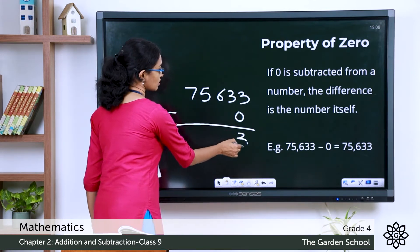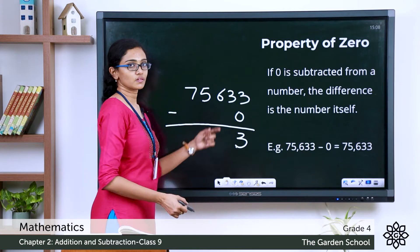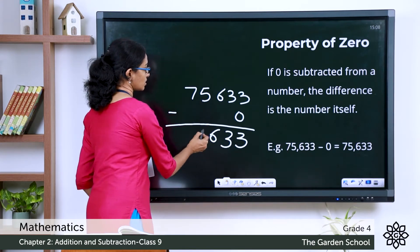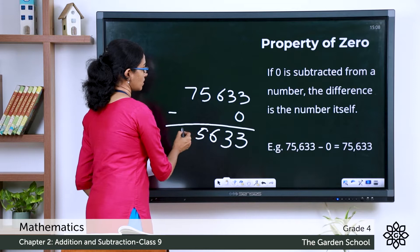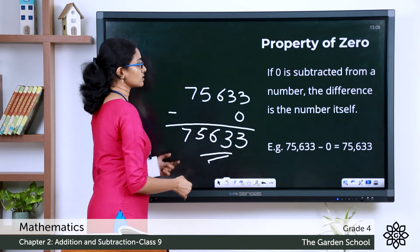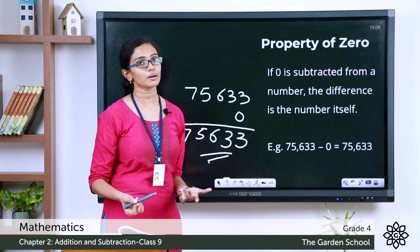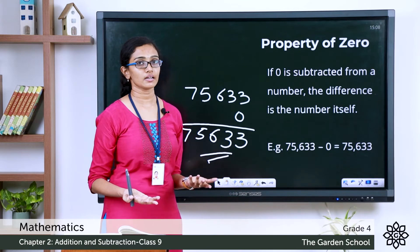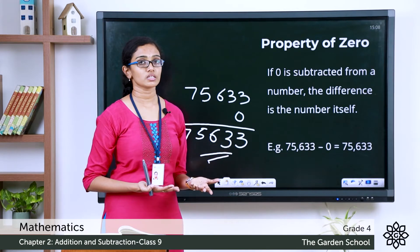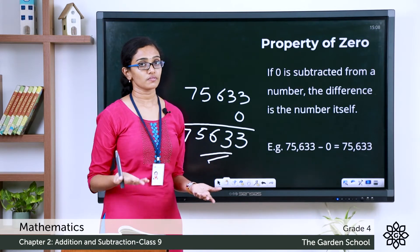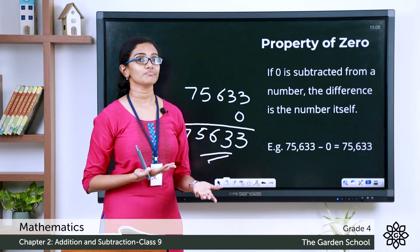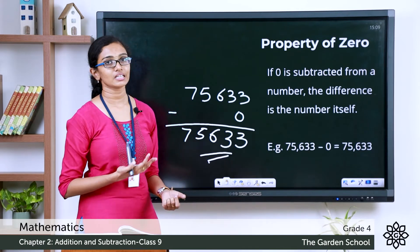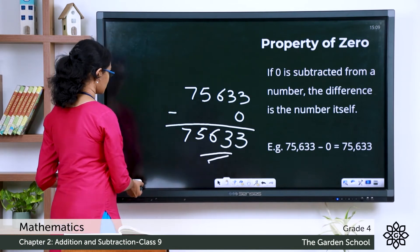Let's subtract the ones: 3 minus 0 ones is 3 itself. Bringing all the other digits down, we get the same number itself. So any number — 1, 2, 25, any number minus 0 — gives the number itself as the difference. That's the property of zero.